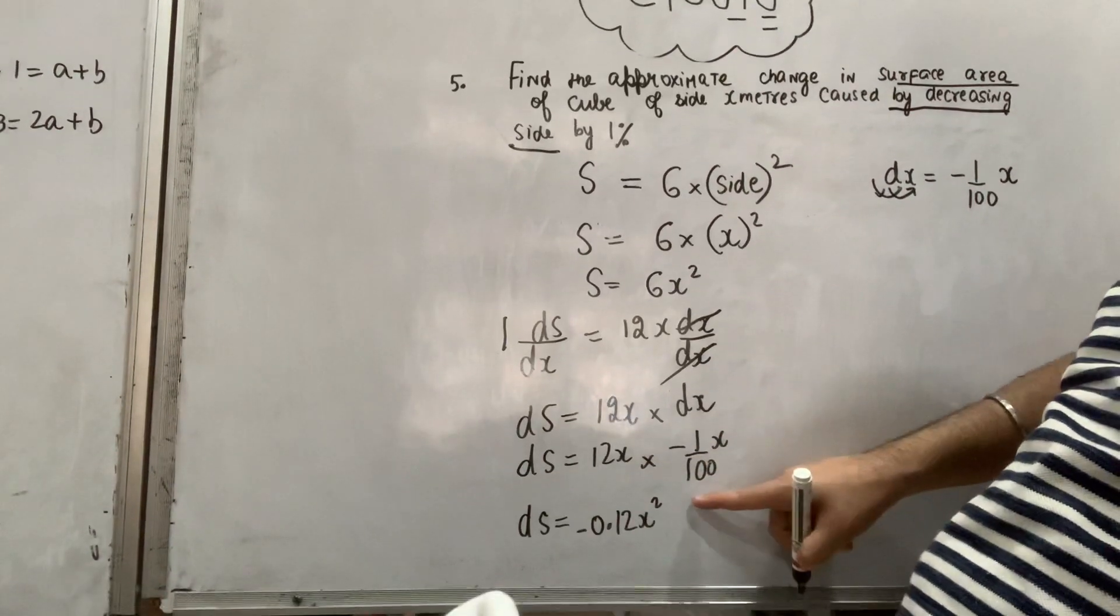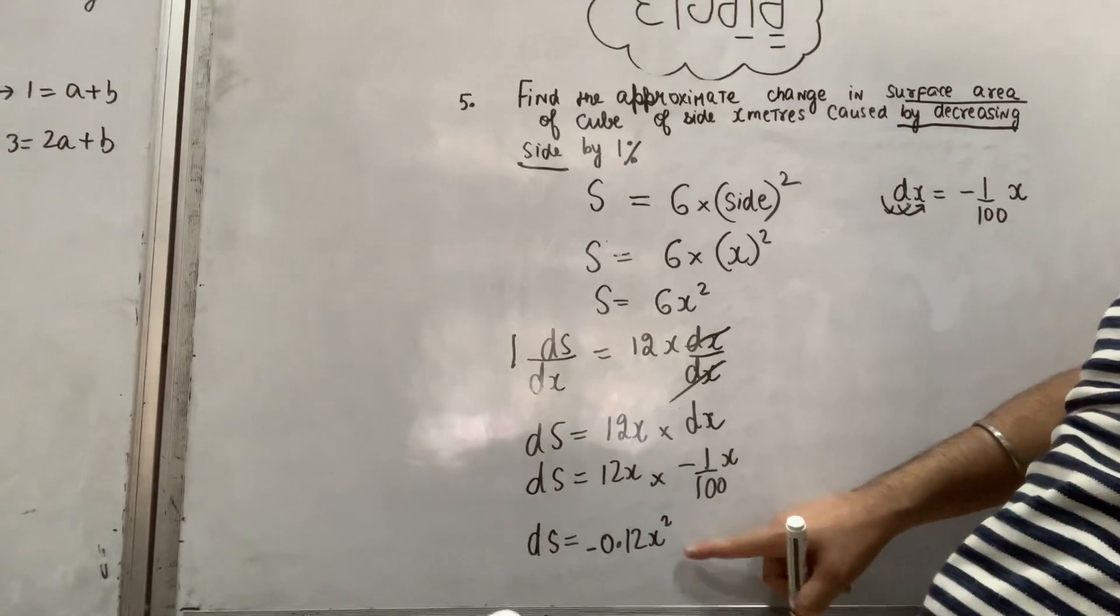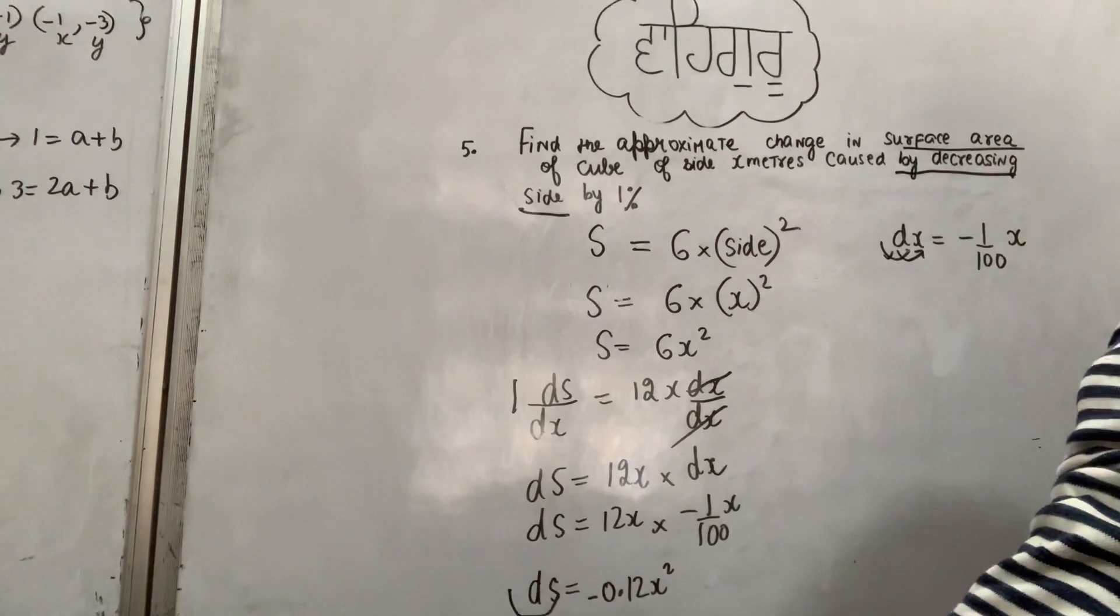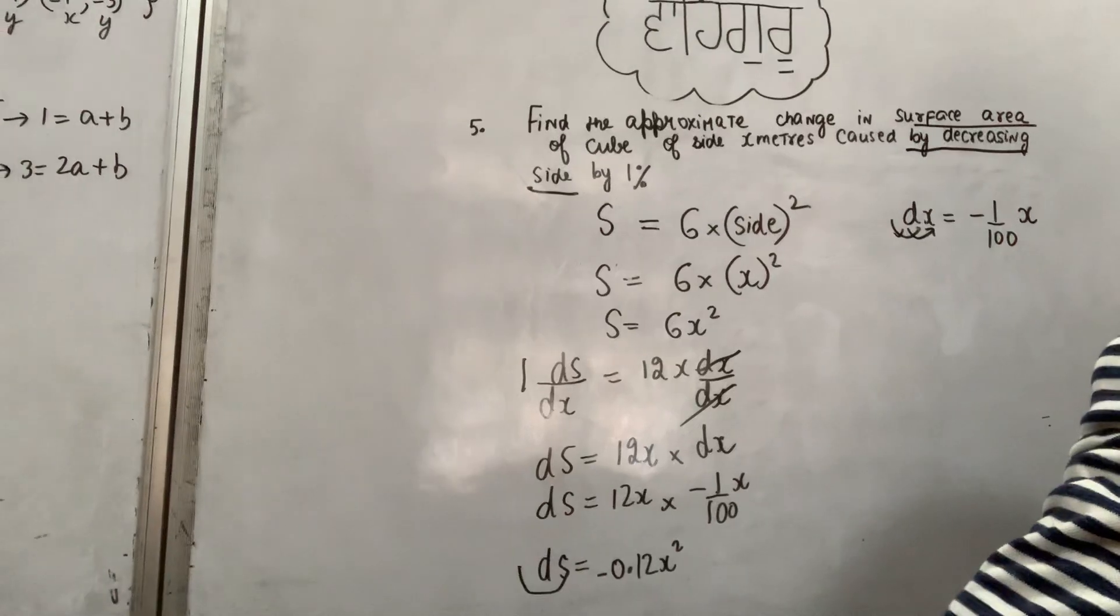Solving: dS = 12x × (-1/100)x = -0.12x². This means the surface area will decrease by approximately 0.12x² square meters. Question is finished. Thank you very much.